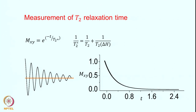For measurement of T2 — the transverse relaxation time — the FID decays due to two factors: the spin-spin relaxation time T2 and the contribution from field inhomogeneities. Field inhomogeneities cause different lines to precess at slightly different frequencies, which appears as an additional line-width factor. Therefore the measured time constant is T2-star: 1/T2* = 1/T2 + 1/T2(inhomogeneity). The field inhomogeneities cause dephasing and must be removed if you want to measure T2 precisely.